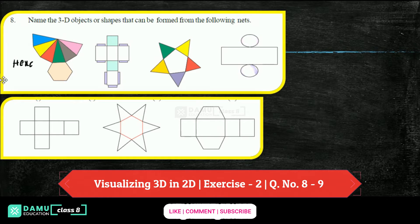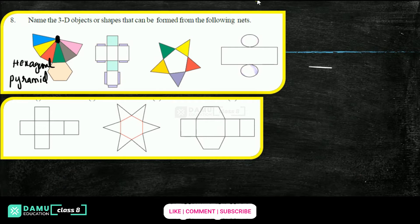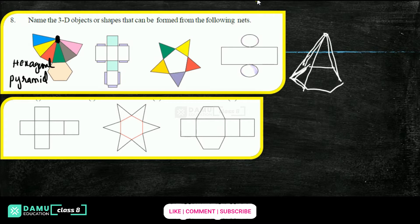This is a hexagonal pyramid. Why? Because all the faces are adjoining at one point — that is the apex point. You can draw it like this: keep one point and connect all the faces to it. This is a hexagonal pyramid.